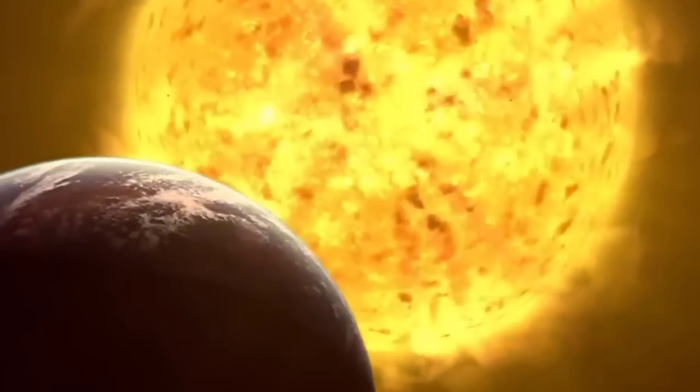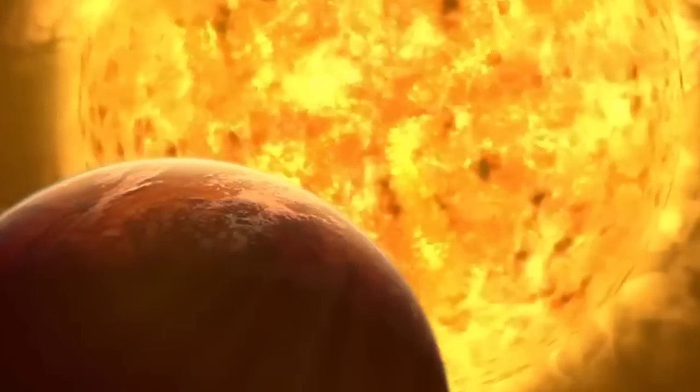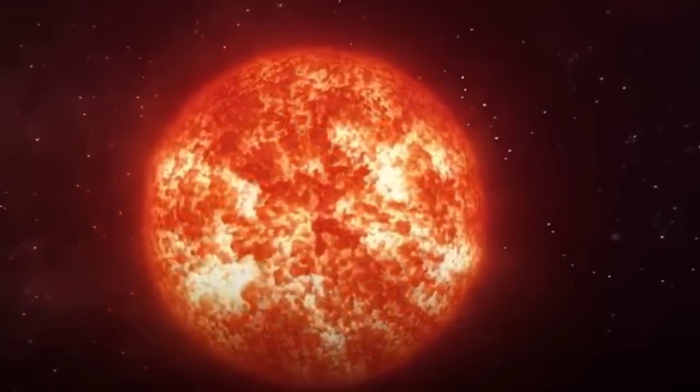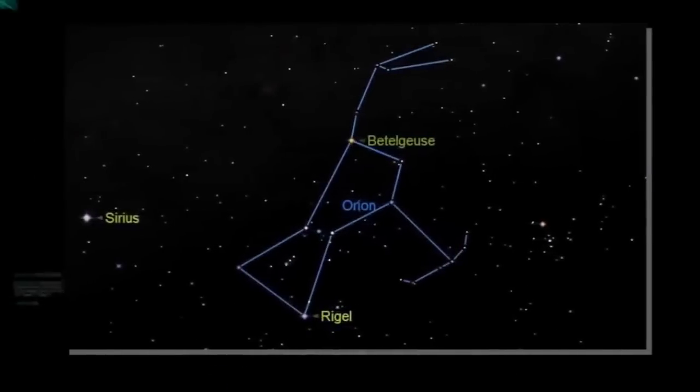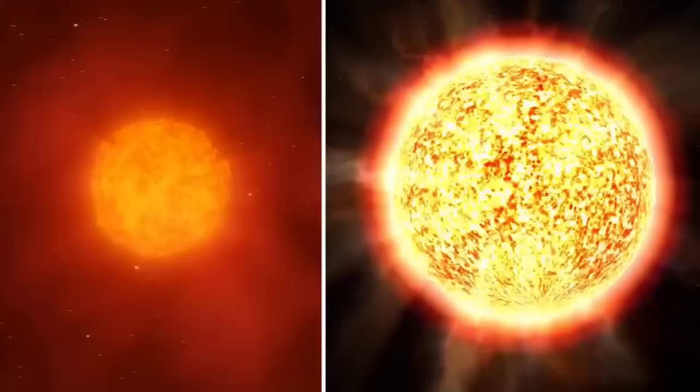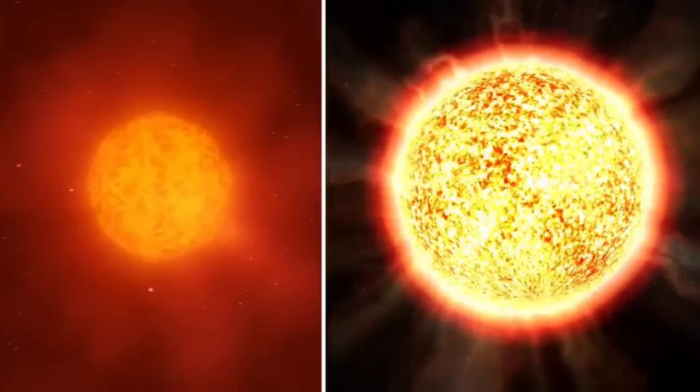Betelgeuse is the nearest red supergiant star to Earth. Someday it'll explode as a supernova, but when? Just over a year ago in late 2019, Betelgeuse sparked excitement around the world when it began dimming noticeably. The strange dimming caused some to believe the big event was close at hand.